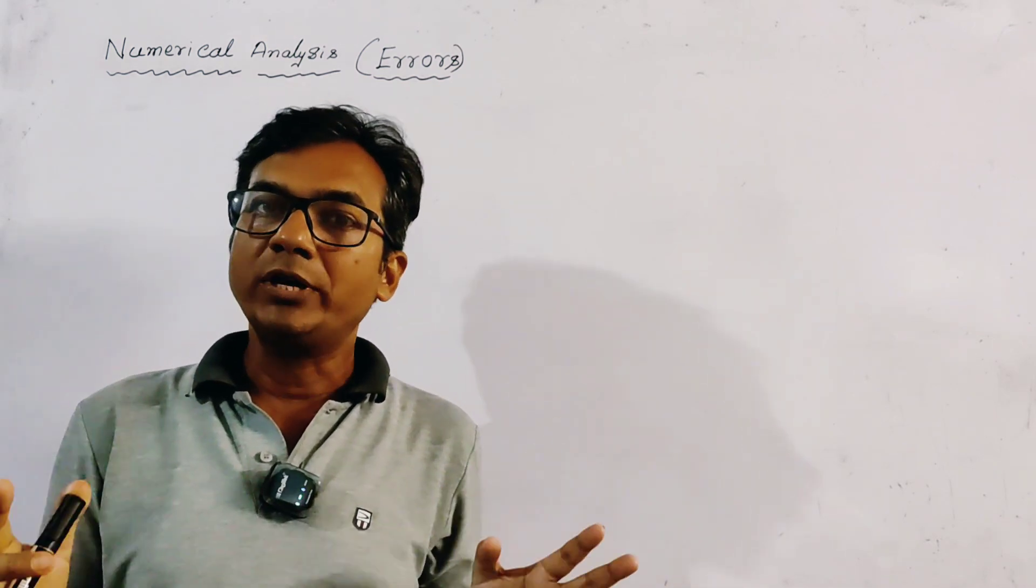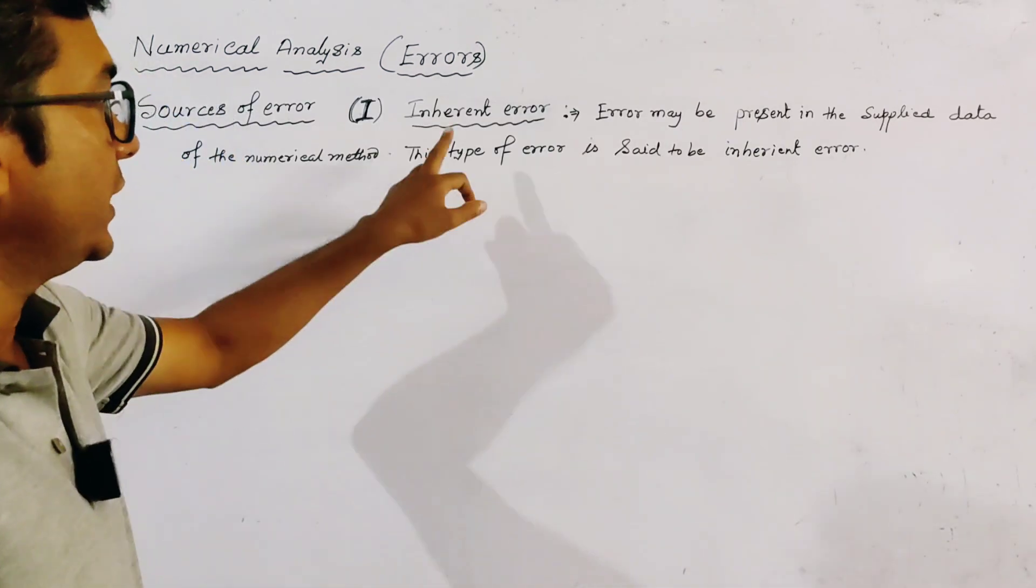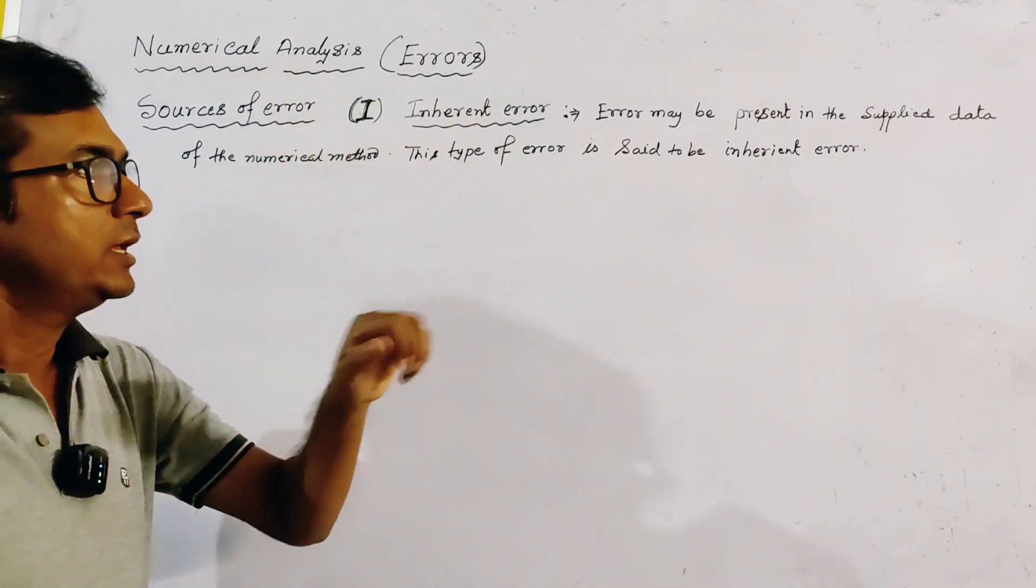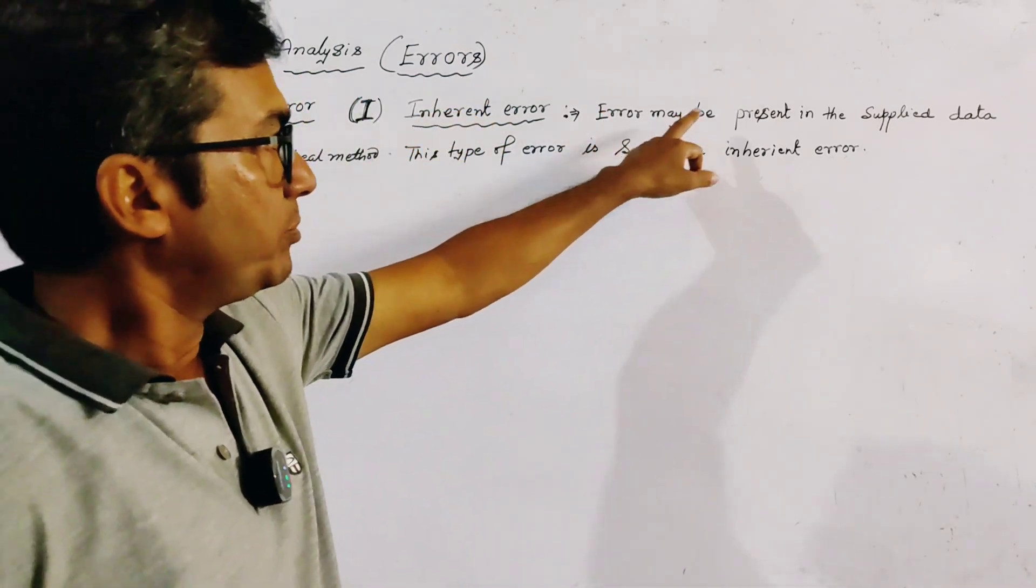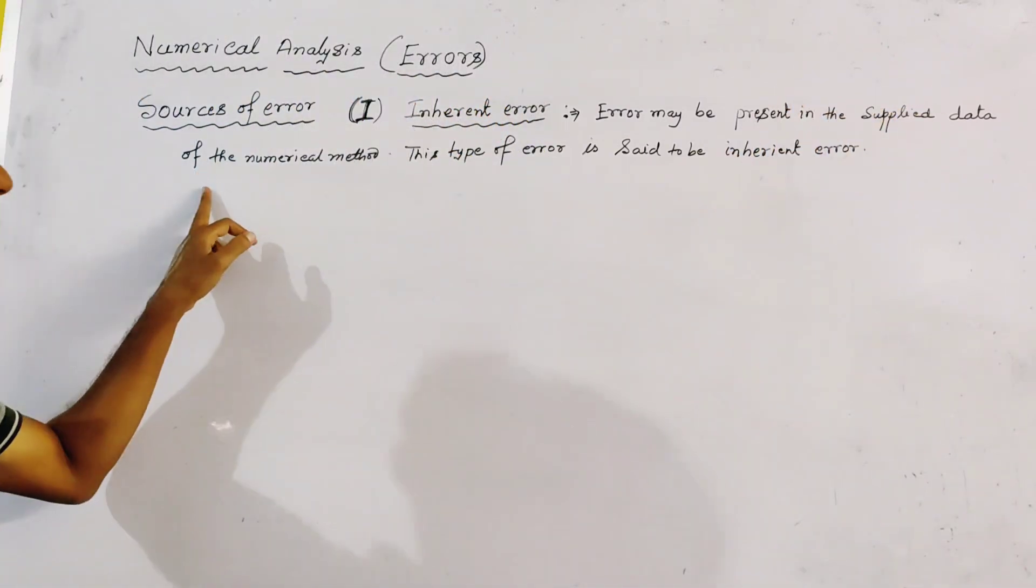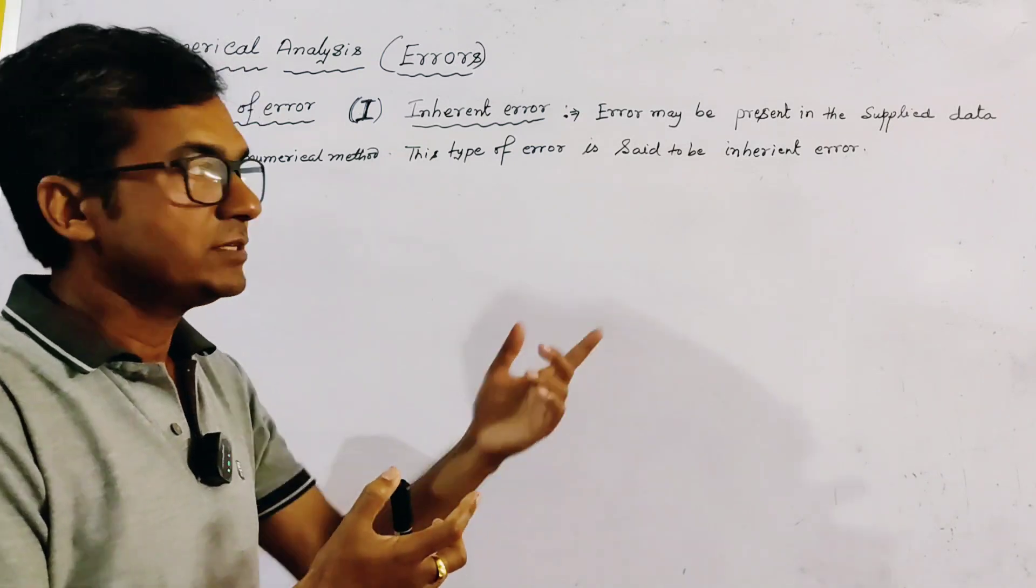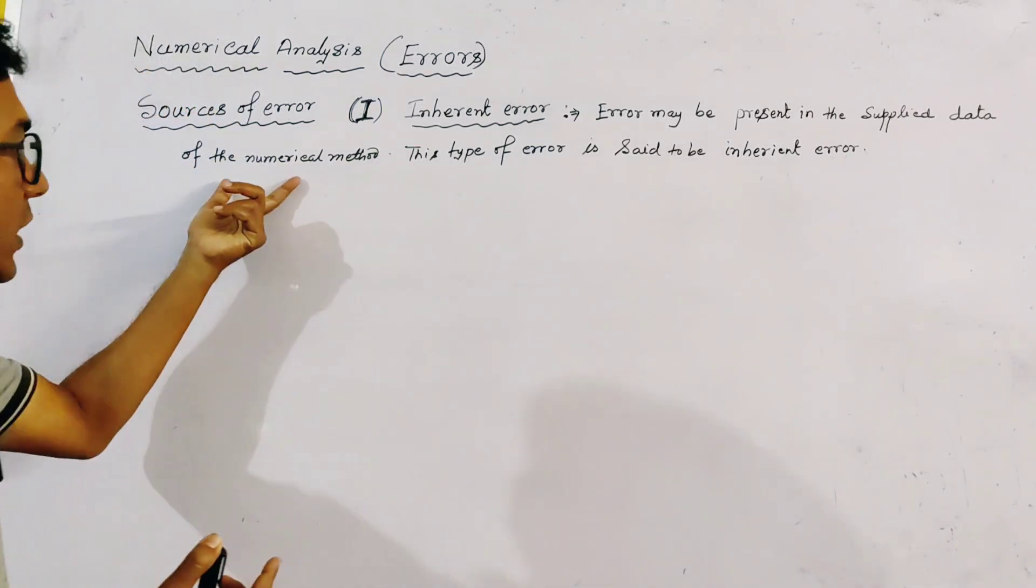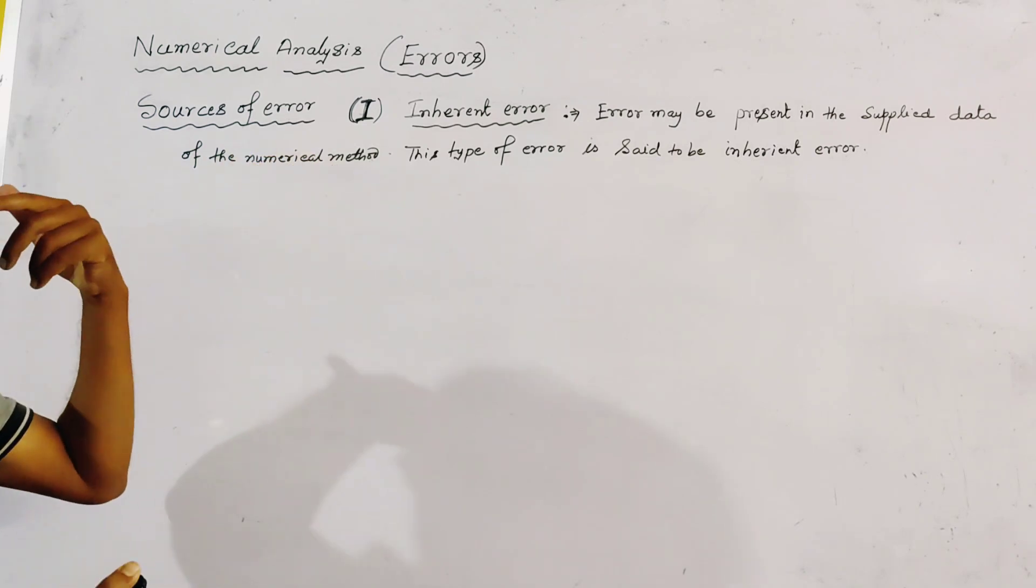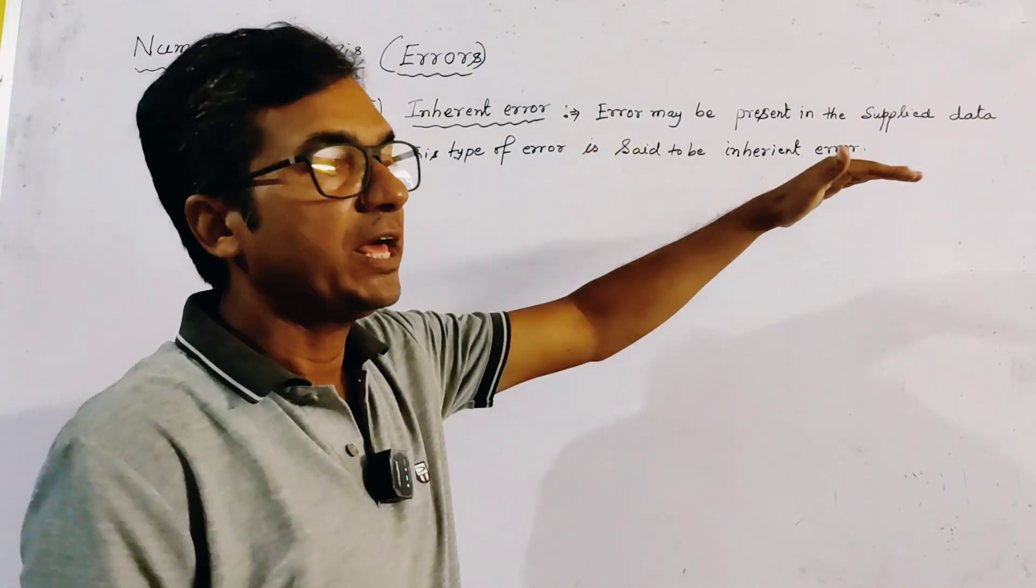Now what are the three different ways? First type of error is inherent error. And what is inherent error? Error may be present in the supplied data of numerical method. Maybe supplied wrong data. That is, the supplied data is full of error. Then this type of error is said to be inherent error.